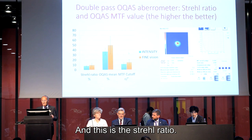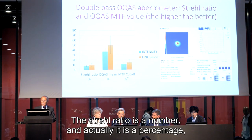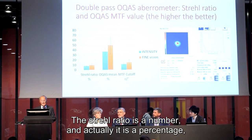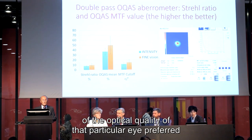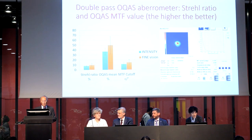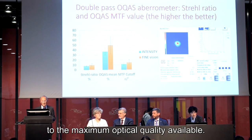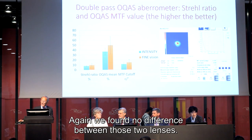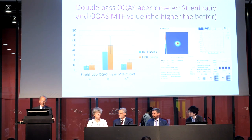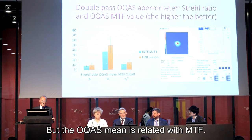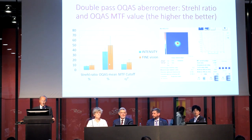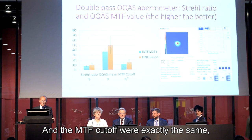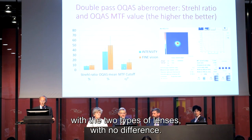This is the Strehl ratio. The Strehl ratio is a number representing the percentage of the optical quality of the particular eye compared to the maximum optical quality available. Again, we found no difference between those two lenses. The OQAS mean is related with MTF, and the MTF cut-off were exactly the same with the two types of lenses with no difference.